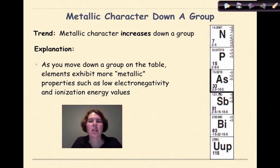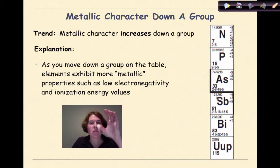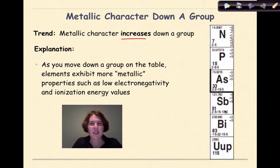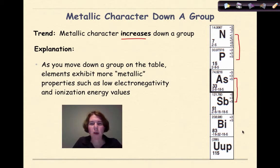Now let's talk about metallic character down a group. Questions about this on the Regents exam typically involve groups 15 and 16, because those groups show the greatest difference as you go down — from non-metals at the top, to metalloids, to metals at the bottom. The general trend is that metallic character increases down a group, as elements exhibit more metallic properties such as low electronegativity and ionization energy values. Group 15 is a classic example: nitrogen and phosphorus are non-metals at the top, arsenic and antimony are metalloids in the middle, and bismuth at the bottom is a metal.